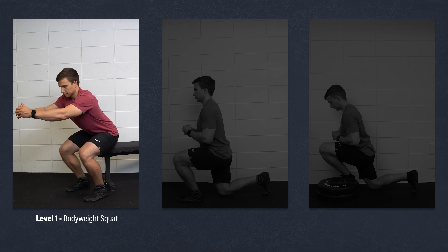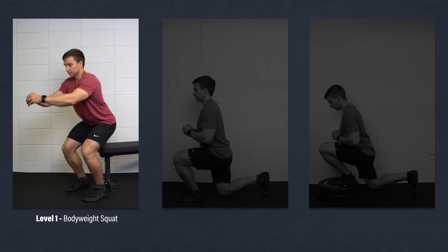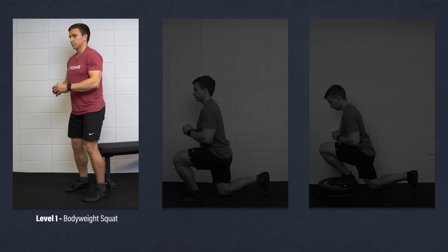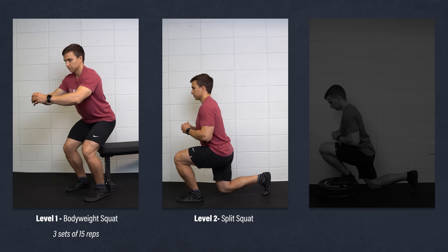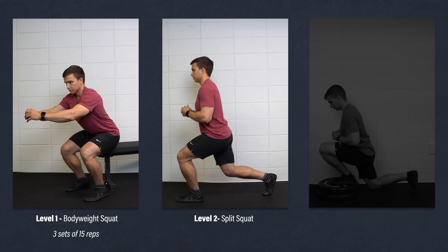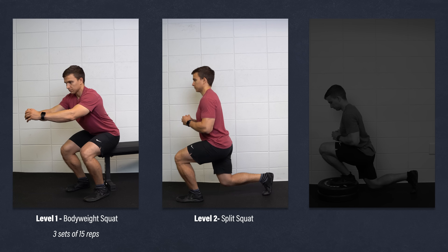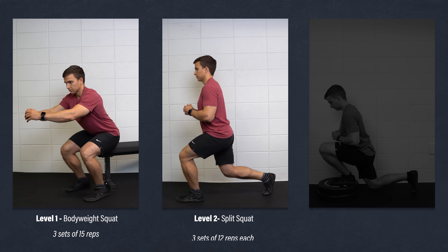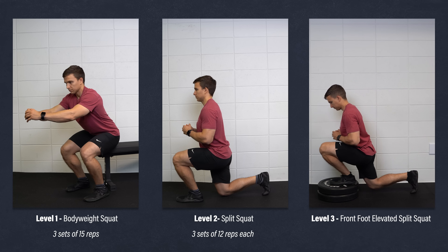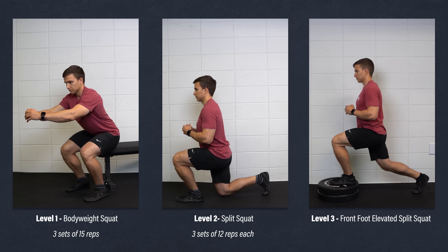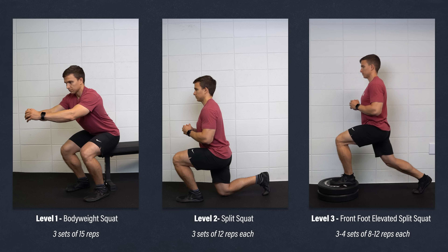Level 1 — Bodyweight Squat: Gently tap your butt to a chair and stand back up. If too challenging, shorten the range of motion or use your hands for assistance. Aim for three sets of 15 reps. Level 2 — Split Squat: Start in a stride stance and lower yourself so your back knee taps the floor. Shorten range of motion or use hands if needed. Aim for three sets of 12 reps. Level 3 — Front Foot Elevated Split Squat: Elevate the front leg using a 2 to 4 inch object. Aim for three to four sets of 8 to 12 slow, controlled reps. Add weight as needed.